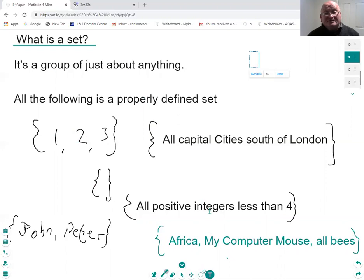This one down here, all positive integers less than 4. That's just another way of writing the same set. Everything that's in that set is in that set, those two sets are the same.